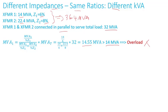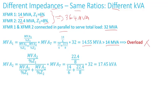At 88% loading of the combined capability of both transformers, transformer one is already overloaded. Applying the same equation to transformer two, I get 17.45 MVA, so transformer two is not overloaded.